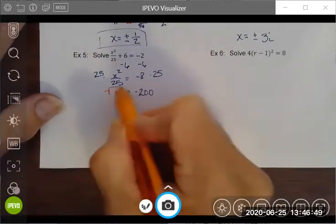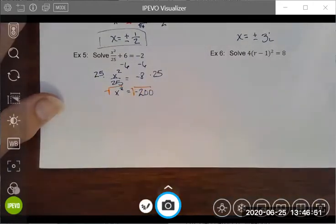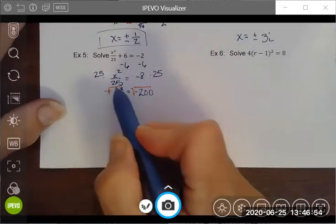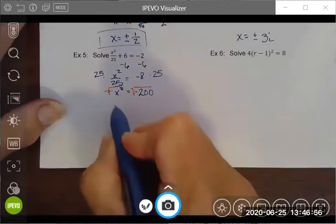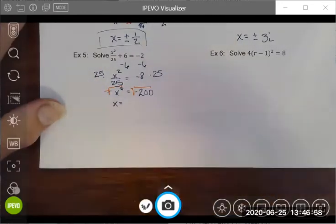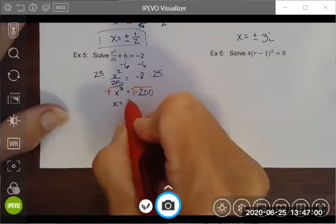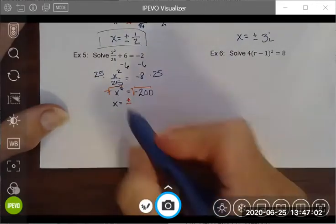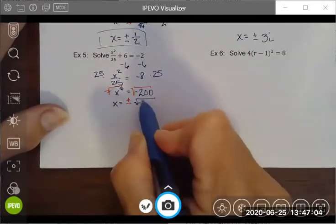I end up with x squared equals negative 200. At this point, I take the square root of both sides. Inverse operations undo each other. So I end up with x equals the positive and the negative square root of negative 200.